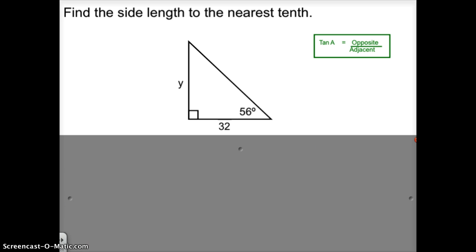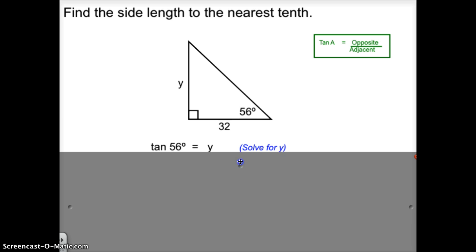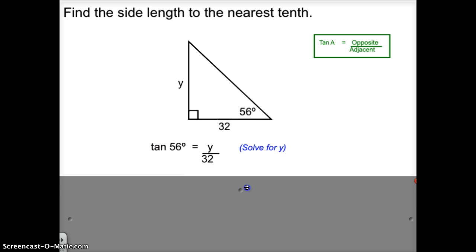Take a second and see if you can solve for Y. Alright, so if we use the formula, the tangent of angle A equals the opposite over the adjacent, we would substitute in and find that the tangent of 56 degrees equals Y divided by 32.